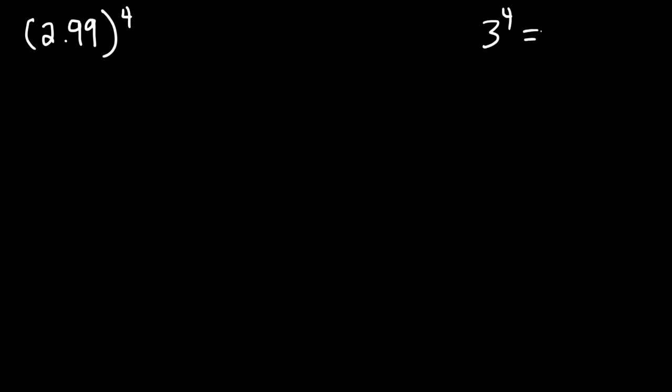Consider this problem. How can we estimate 2.99 raised to the fourth power? We know the answer is close to 3 to the fourth power. 3 to the fourth is 81. But what's 2.99 raised to the fourth power? We know it's less than 81, but how can we get a good approximation of the answer without a calculator?